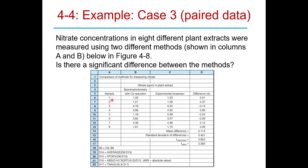Each plant sample is measured once by each method. We calculate the difference between the two methods for each sample — for example, 1.23 minus 1.22 gives 0.01; 1.58 minus 1.21 gives 0.37; 4.04 minus 4.18 gives -0.14. Some differences are positive and some negative — it's important to always subtract in the same order.